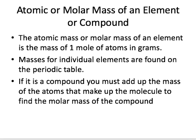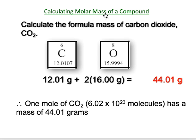If you have a compound, you have to add up the masses of the atoms that make up the molecule to find the molar mass. For example, for carbon dioxide CO2, that's one carbon and two oxygens. So the molar mass is 12 grams plus 2 times 16 grams — rounding to the hundredths place — which equals 44.01 grams. So one mole of carbon dioxide molecules, which is 6.02 times 10 to the 23rd molecules, has a mass of 44.01 grams.